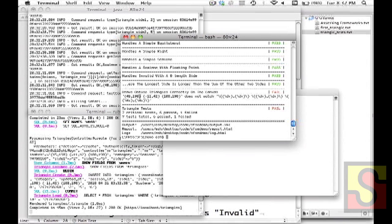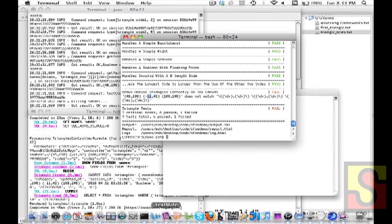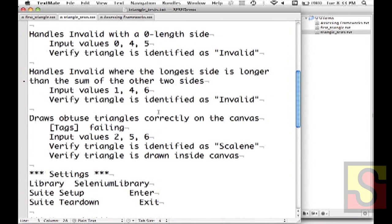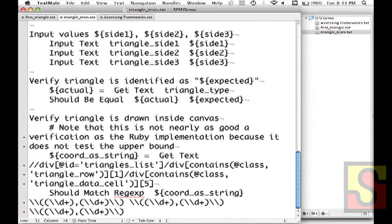It's very much like FitNess but one of the powers is you don't have to go all the way to Python. Here we see the one that's failing and it's failing because I did a regular expression match on the coordinates that were returned and there was a negative number. That should never happen, but the way that expectation is expressed in my test is verify triangle is drawn inside canvas. All I've done is create a keyword that expresses the intent and the definition of that keyword uses a regular expression against the coordinates that are reported on that user interface.